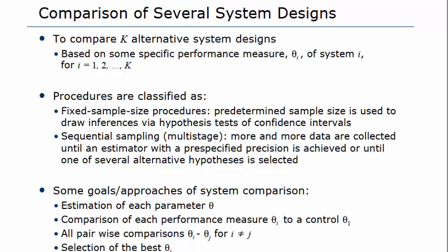In the case of a sequential sampling scheme, also termed multi-stage, it is one in which more and more data are collected until an estimator with pre-specified precision is achieved, or until one of the several alternatives is selected with the probability of correct selection being larger than a pre-specified value. A two-stage or multi-stage procedure is one in which an initial sample is used to estimate how many additional observations are needed to draw conclusions with the specified precision. For example, a two-stage procedure for estimating the performance measure of two systems, theta_i and theta_j.